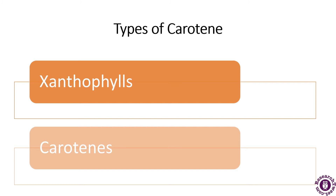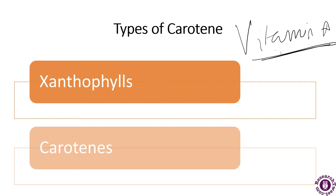Carotenoids are classified into two types: xanthophylls and carotenes. Both types have antioxidant properties. In addition, some carotenoids can be converted to vitamin A, which is an essential component for human health and growth. Pro-vitamin A carotenoids include alpha-carotene and beta-carotene, while non-pro-vitamin A carotenoids include lutein, zeaxanthin, and lycopene.